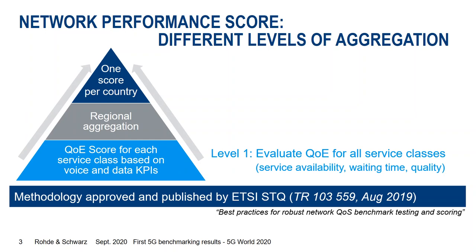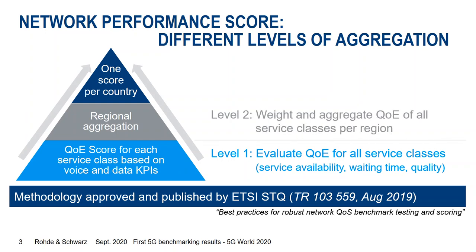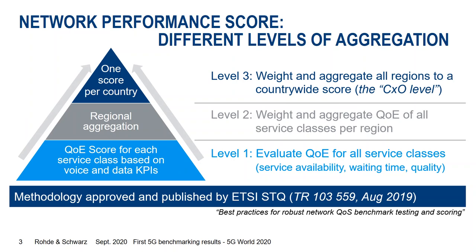The methodology has three levels. The most important is level one, where we evaluate the QoE of all service classes. Each service class normally has three criteria: service availability — do I have access to the service at all; waiting time — how long do I have to wait to see the first picture in a video stream; and quality of the media itself, such as downlink throughput in a capacity test. Level two involves weighting and aggregating QoE per region — big cities, smaller towns, or rural areas. Level three aggregates all regions into a countrywide score — the famous single figure that CxOs always look at.